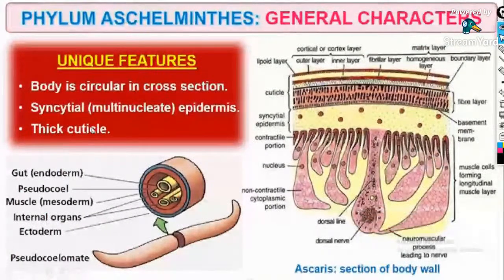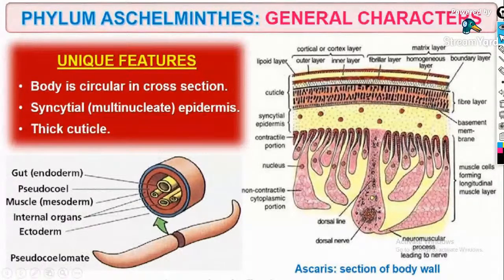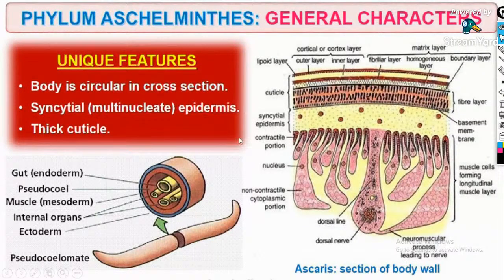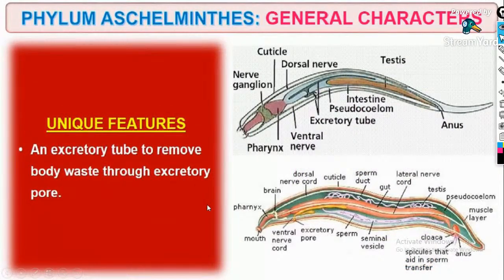Unique features: their body is circular in cross section — look at the cross section and you can see it is circular. They have a multinucleated epidermal layer — look, you can see the multinucleated epidermis. It has a thick cuticle. There is a separate excretory tube to remove body waste through an excretory pore, so there is an excretory system present. The excretory organ is protonephridia.